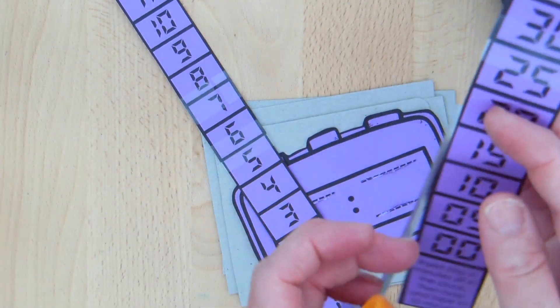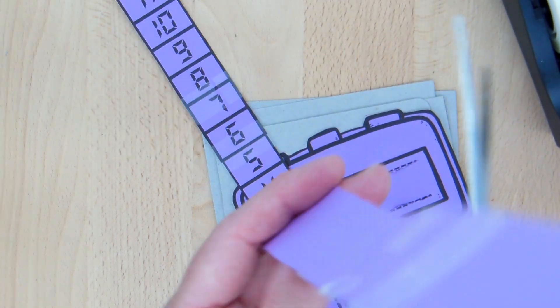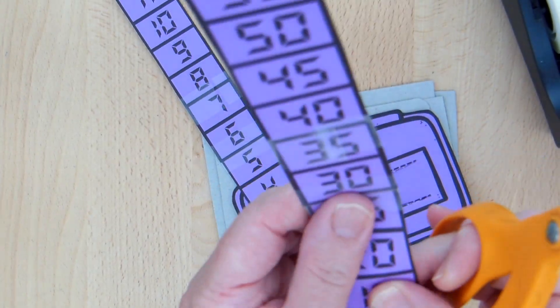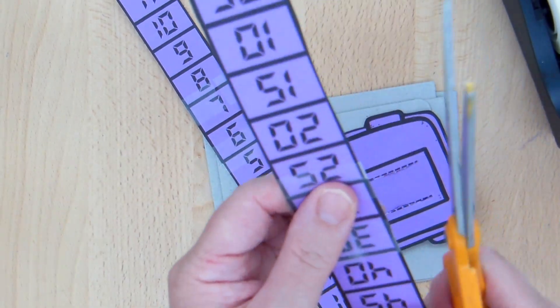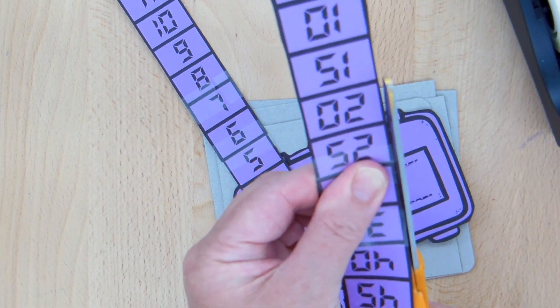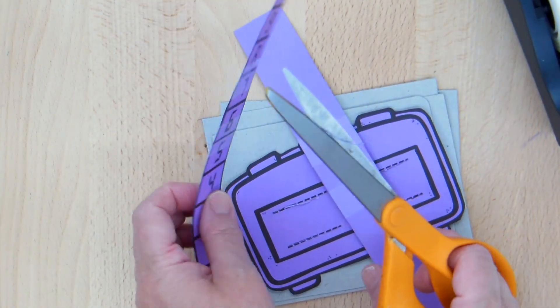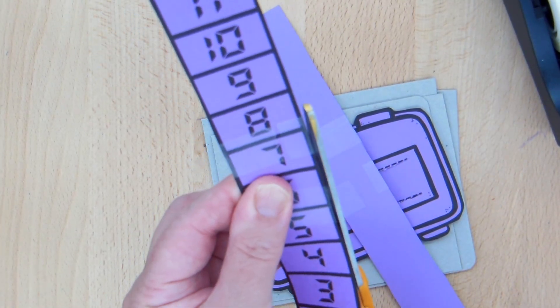When you do this, if you end up that you didn't get it perfectly aligned or your tape is sticking out, you can just trim it just a little bit and it'll be fine. It won't undo the fastening from the tape when you do that.